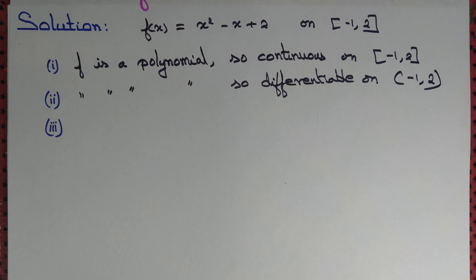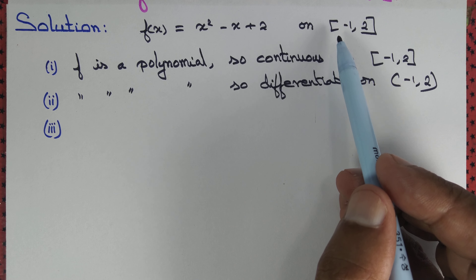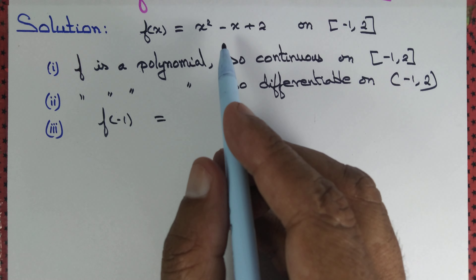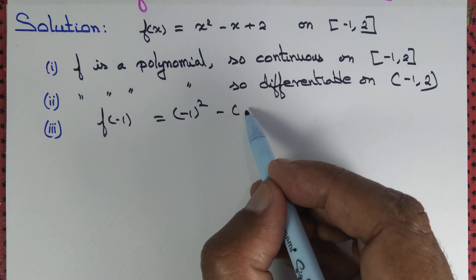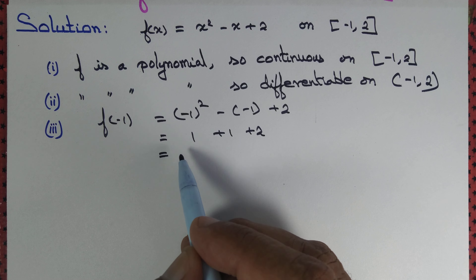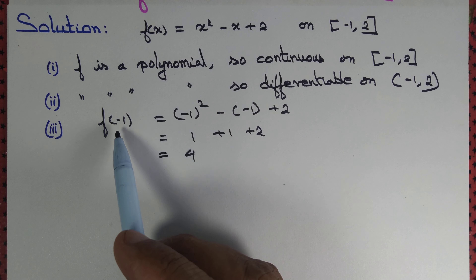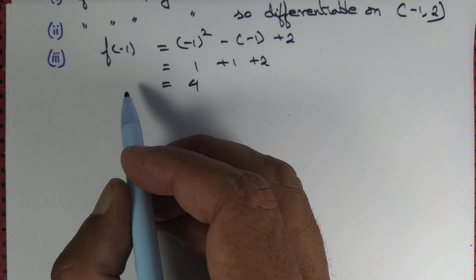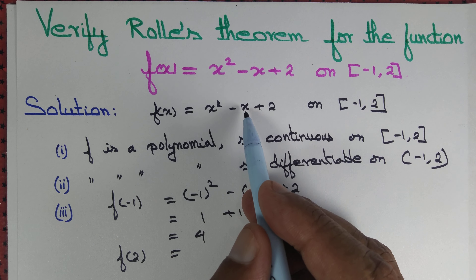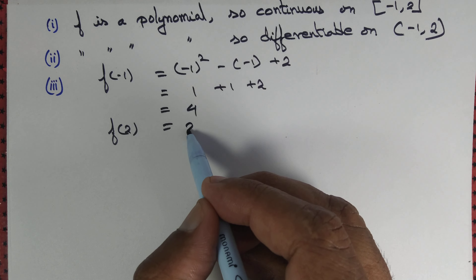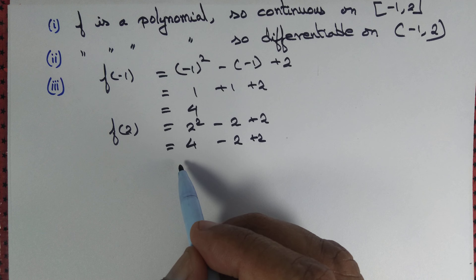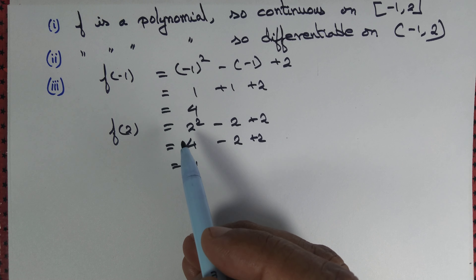The last criterion we need to satisfy is that the values of the function at the endpoints are the same. So f(-1) = (-1)² - (-1) + 2 = 1 + 1 + 2 = 4. And f(2) = 2² - 2 + 2 = 4 - 2 + 2 = 4. Therefore f(-1) = f(2).